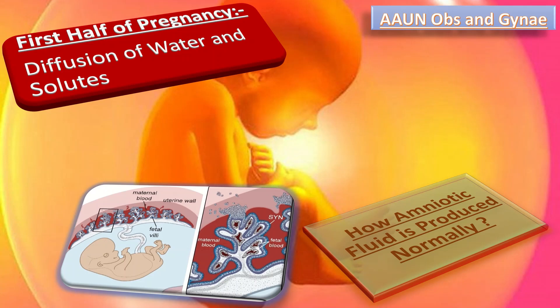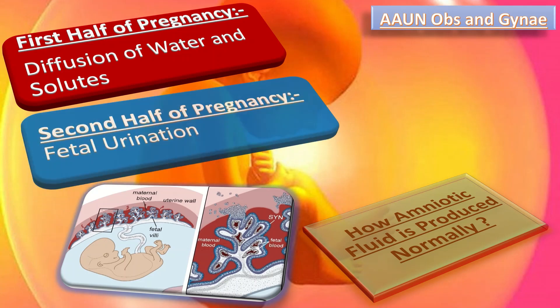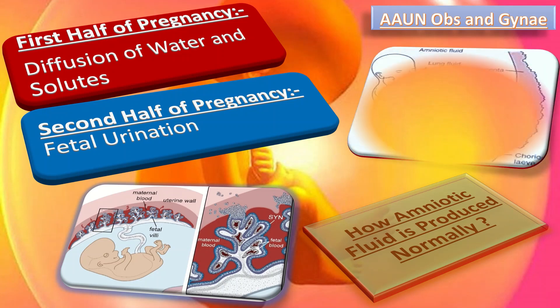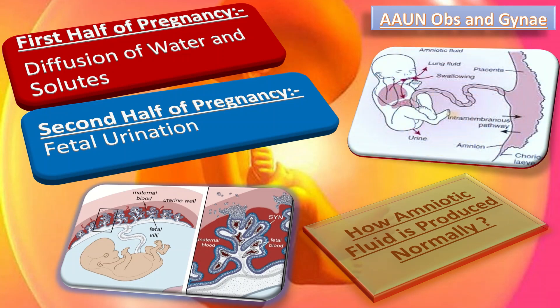By the second trimester, the fetal skin becomes keratinized, making it impermeable to further diffusion. At this time, the fetus contributes to amniotic fluid volume and composition almost exclusively through fetal urination.